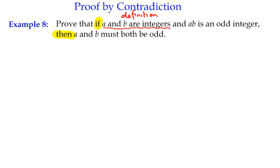We're really seeing that if two numbers A and B multiply together to give us an odd integer, then A and B must both be odd. So there's our implication statement.